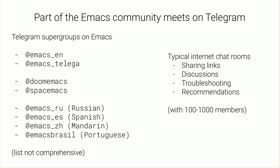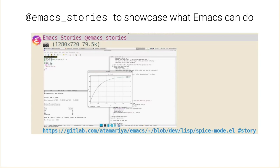These are what you would expect from traditional internet chat rooms — used for sharing links, discussing, troubleshooting, and giving each other recommendations. I think they are healthy communities, typically with 100 to 1000 members. An example of an initiative put forth by the Emacs community on Telegram is Emacs Stories. Emacs Stories collects links, messages, and pictures that can showcase what Emacs can do. One of the goals is to show people new to Emacs what you can achieve if you spend time with your editor. And here, what I'm showing you is a screenshot from Telega.